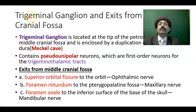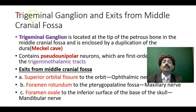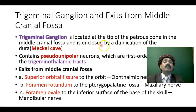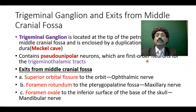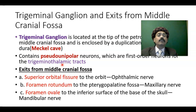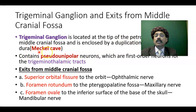The trigeminal ganglion is a collection of nerve cells located at the tip of the petrous part of the temporal bone in the middle cranial fossa, enclosed by a duplication of the dura called Meckel's cave. It contains pseudounipolar neurons, which are the first-order neurons for the trigeminal thalamic tract — since the thalamus is the major sensory relay station for sensation from the face and head.